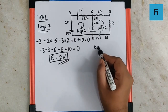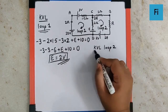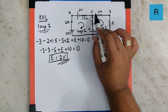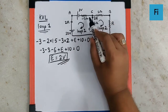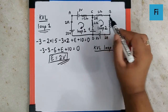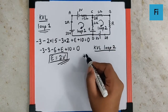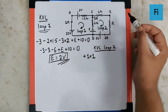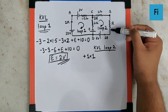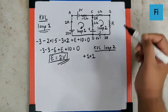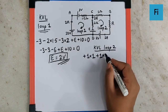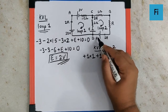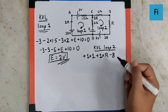To find resistance R, we apply KVL in loop 2, starting at point C. Traveling from C to B is in the opposite direction of the anti-clockwise current, so it is positive IR: 1 × 1 = plus 1. The next resistance R is also traversed opposite to the current direction, giving plus IR = plus 1 × R. Then we encounter a battery traversed from positive to negative terminal, which gives minus 8.